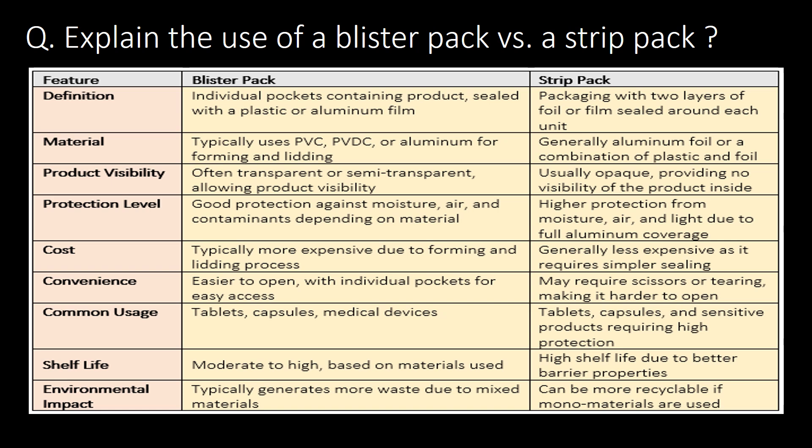Explain the use of blister pack versus strip pack. Blister pack holds individual pockets containing product sealed with plastic or aluminum film, whereas strip pack packaging is done with two layers of foil or film sealed around each unit.